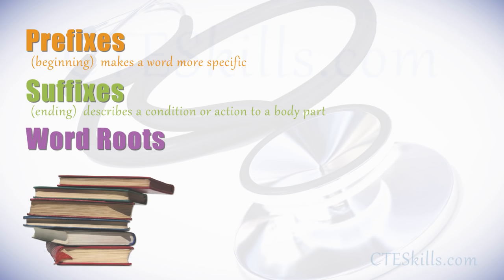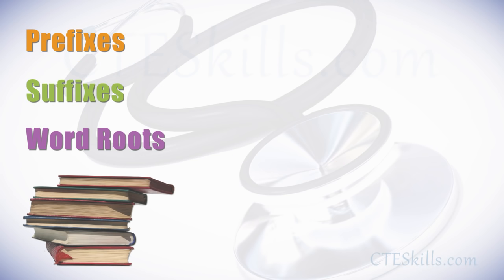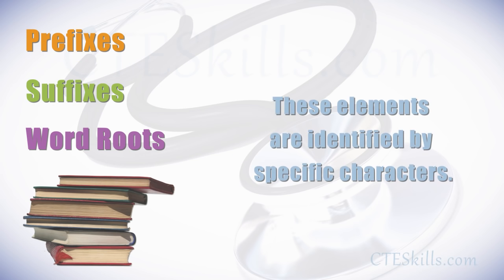Word roots are the main elements within the medical term, to which prefixes, suffixes, and connecting vowels are added. These elements can be identified by specific characters: a root word will be followed by a forward slash, a suffix will follow a hyphen, and a prefix will precede a hyphen.